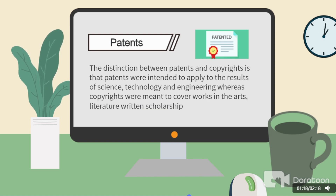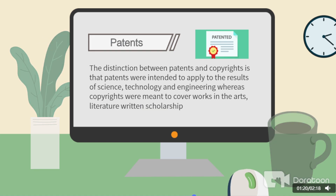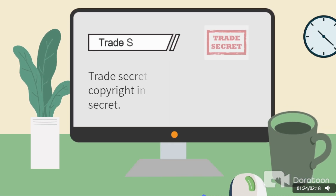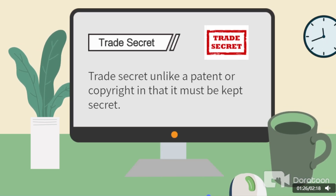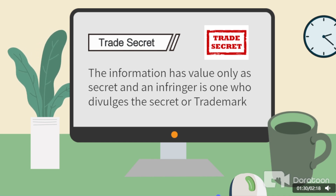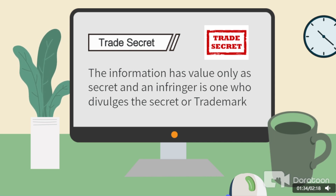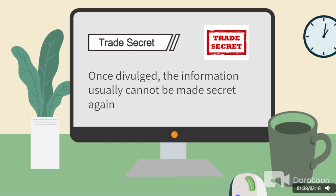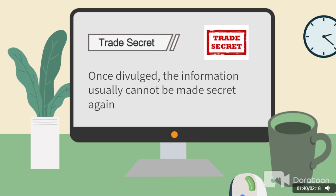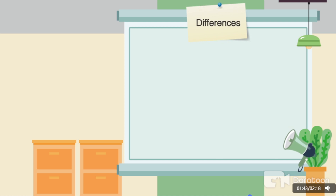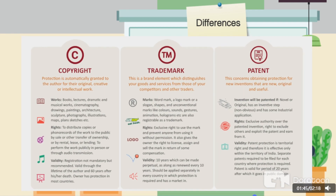Literature, written scholarship. A trade secret is unlike a patent or copyright in that it must be kept secret. The information has value only as a secret, and an infringer is one who divulges the secret. Once divulged, the information usually cannot be made secret again. This is the difference between the three things we need to protect.